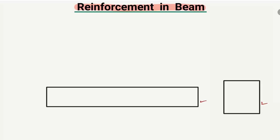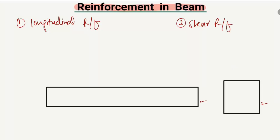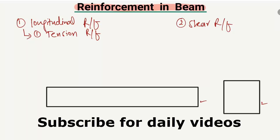There are basically two types of reinforcement in the beam. The first is the longitudinal reinforcement and the second one is the shear reinforcement. Now, discussing the longitudinal reinforcement, there are further three types. The first is the tension reinforcement, which is provided in order to take the tensile stresses in a beam, because concrete is weak in tension.